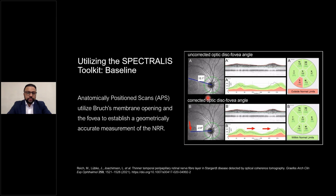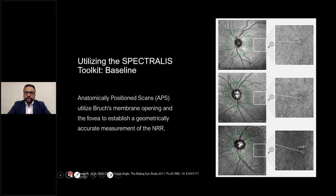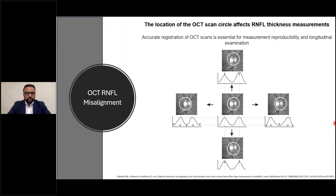Here's an illustration from Reich et al where they performed a circle scan with the fovea way off, resulting in a shift in the superior or inferior peak and an abnormal flag. However, when that optic disc-fovea angle was corrected, the individual had normal RNFL measurements throughout. These anatomically correct scans allow us to individualize scans to each person's configuration of axons, increasing accuracy when comparing individuals to the reference database.